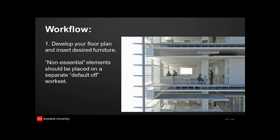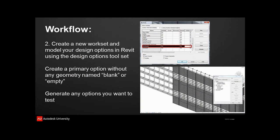So we started by modeling all our geometry — we had it in Revit already because that's what we're using for documentation. For the sun shades, we started making options and putting them on default-off worksets. That's a big thing throughout this presentation: whenever you're doing this stuff, you're going to have a lot of things to test, and the best way is to make a default-off workset in Revit. It won't affect your documentation, nobody else will see it, it will keep your file light. And when you've decided on the one you actually want, you can delete all that junk. We had options where they were three feet apart, four feet apart, one foot deep, three feet deep, et cetera.